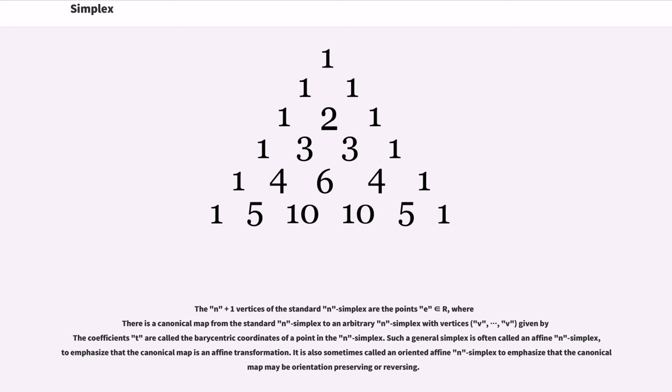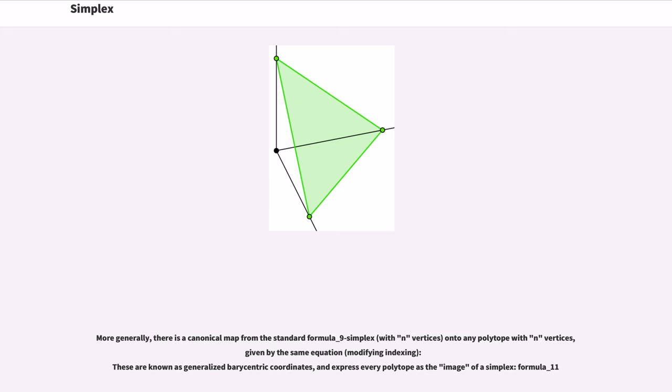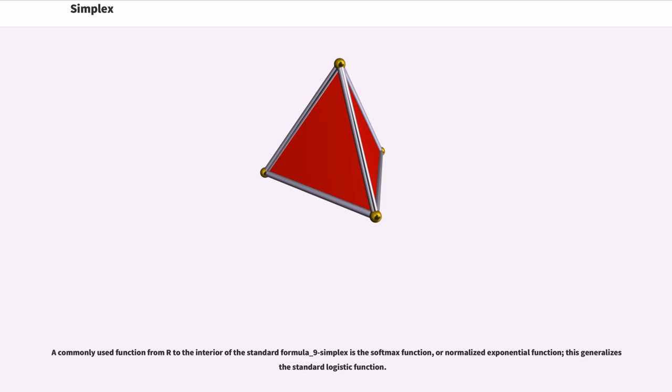Such a general simplex is often called an affine n simplex, to emphasize that the canonical map is an affine transformation. It is also sometimes called an oriented affine n simplex to emphasize that the canonical map may be orientation preserving or reversing. More generally, there is a canonical map from the standard simplex onto any polytope with n+1 vertices, given by the same equation. These are known as generalized barycentric coordinates, and express every polytope as the image of a simplex. A commonly used function from R^n to the interior of the standard simplex is the softmax function, or normalized exponential function. This generalizes the standard logistic function.